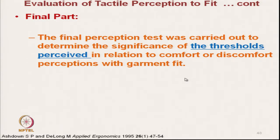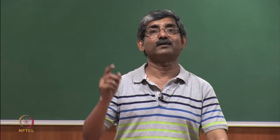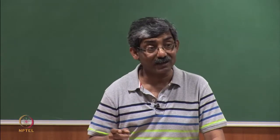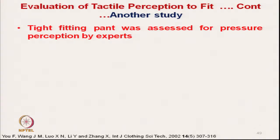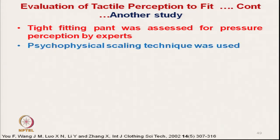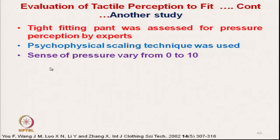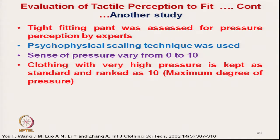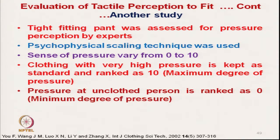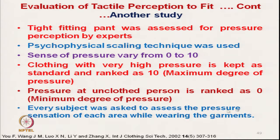In another study, tight-fitting pants were assessed for pressure perception by experts using psychophysical scaling techniques. Pressure sensations were rated from 0 to 10, where 10 means maximum high pressure causing very high discomfort, and 0 means naked — no cloth pressure at all. Every subject was asked to assess the pressure sensation of each area while wearing the garment and then provide a rating.